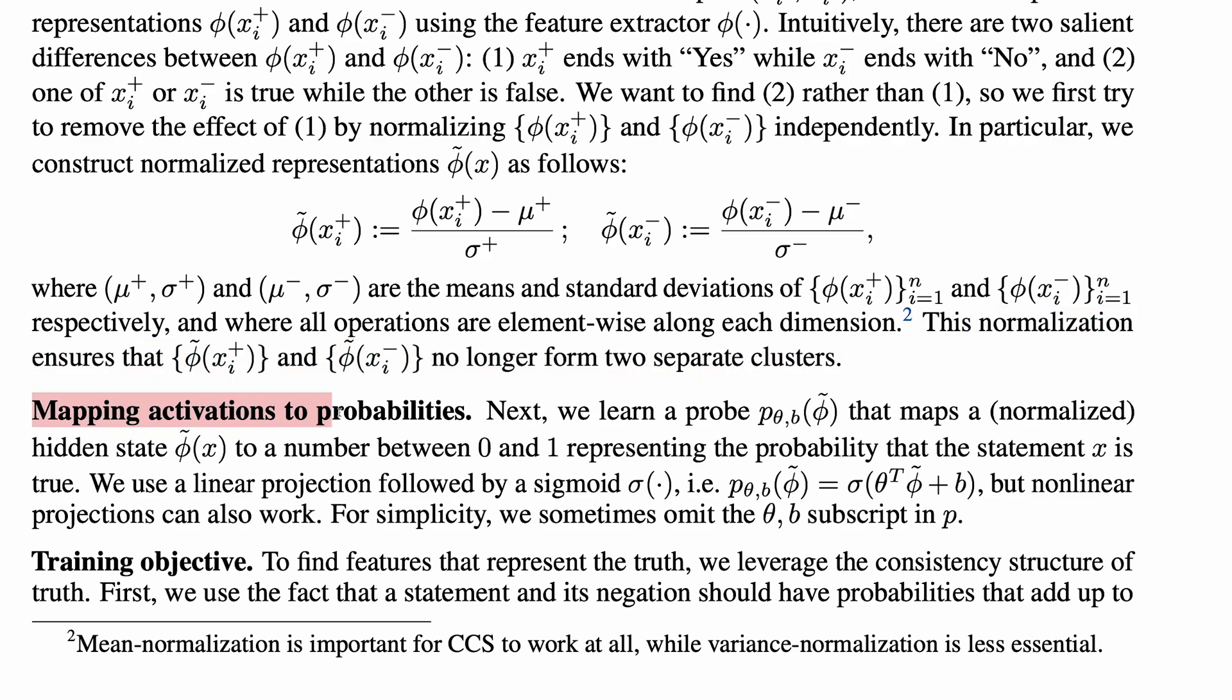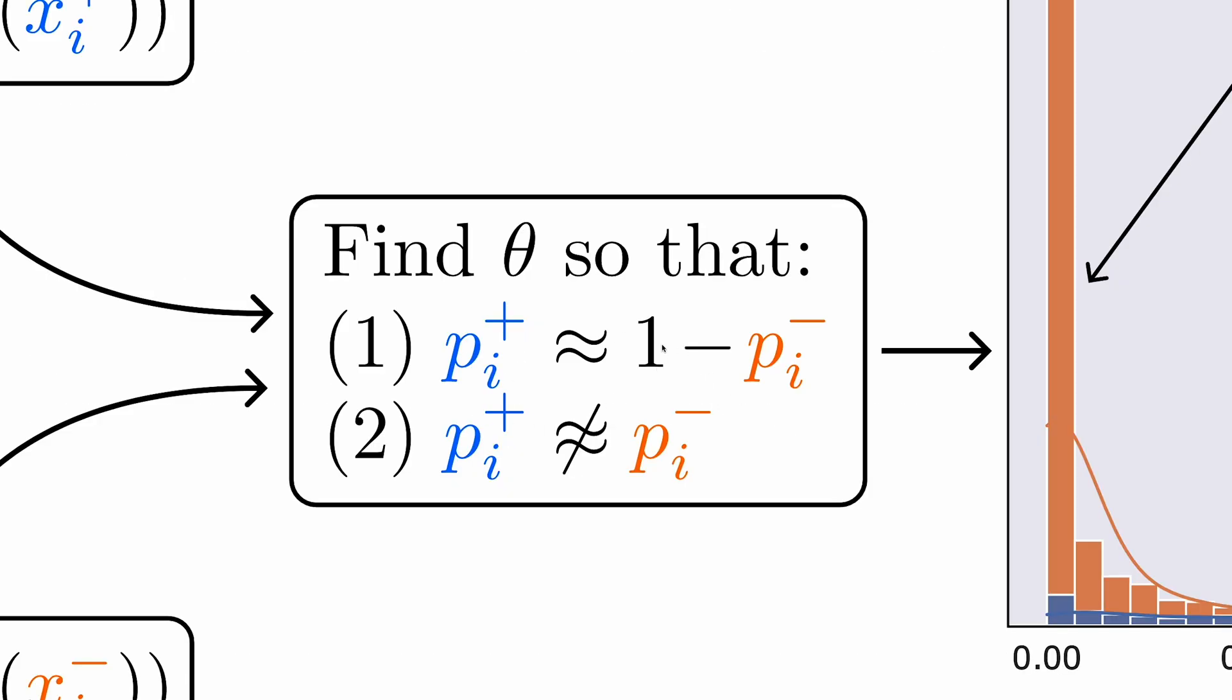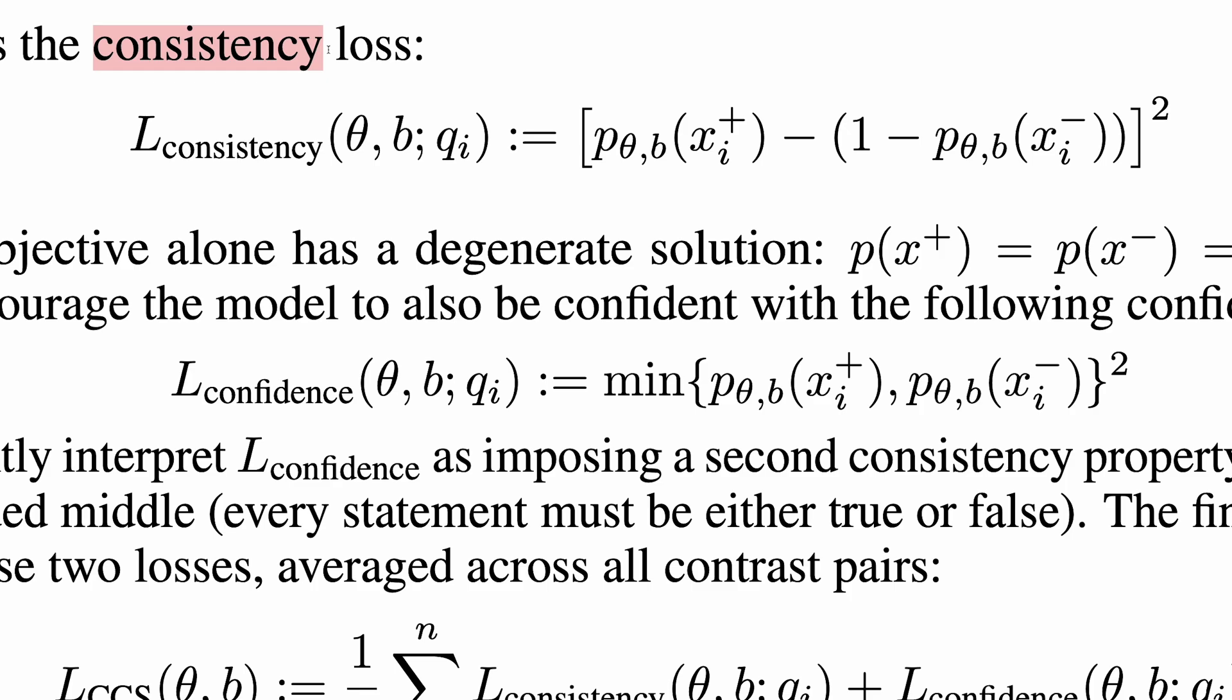The probe that is used for mapping activations to probabilities is just a linear projection followed by a sigmoid. Now we come to the fun part, the training objective. How can we learn the probe so that it satisfies these two properties? With loss functions of course, because we are machine learners, and we love loss functions.